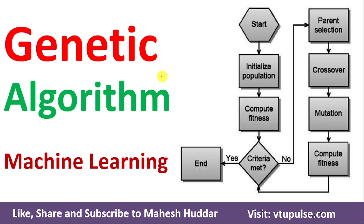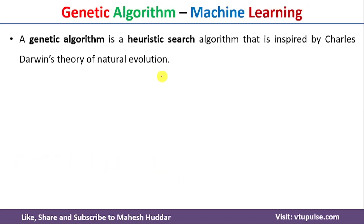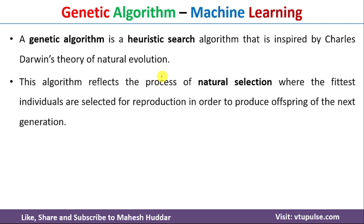Hi, welcome back. In this video I will discuss genetic algorithm in machine learning. Genetic algorithm is a heuristic search algorithm in machine learning that is inspired by Charles Darwin's theory of evolution. This algorithm reflects the process of natural selection where the fittest individuals are selected for reproduction in order to produce offspring for the next generation.